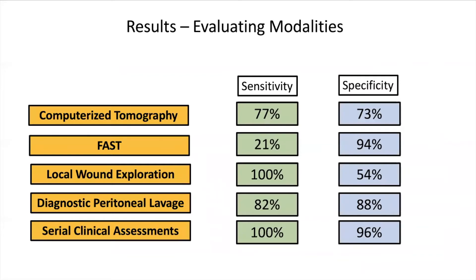Sensitivity and specificity were calculated for each patient assessment modality, based on the resulting therapeutic and non-therapeutic laparotomies. The most sensitive modalities were local wound exploration and serial clinical assessments. When combined with the other modalities, these had no missed injuries or delayed laparotomies. The most specific modalities were FAST and serial clinical assessments. Of note, FAST was performed in 48% of patients but was the primary management decision in only 4% of them. There is no consensus on the use of FAST in penetrating injury, and that is reflected in this study.